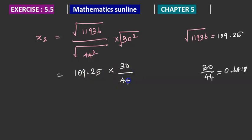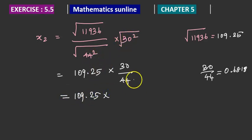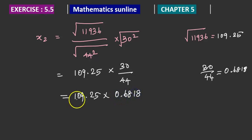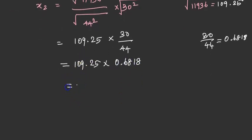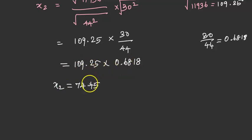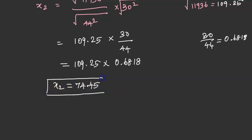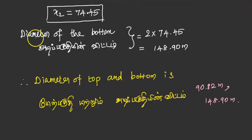Here is 44. Now we divide this one. The answer is 109.25. Square root of 30 divided by 44 is 0.6818. So we multiply to get 74.5 meters. This is x₂, which is the radius at the bottom. Diameter of the bottom equals 2 times x₂, which is 149.0 meters.